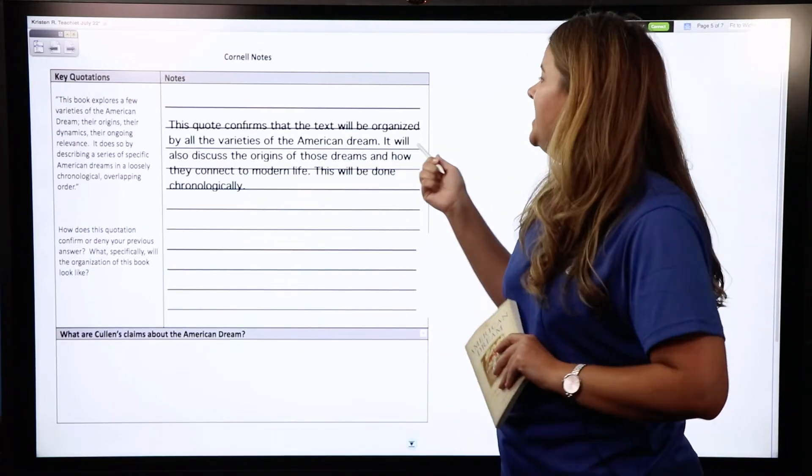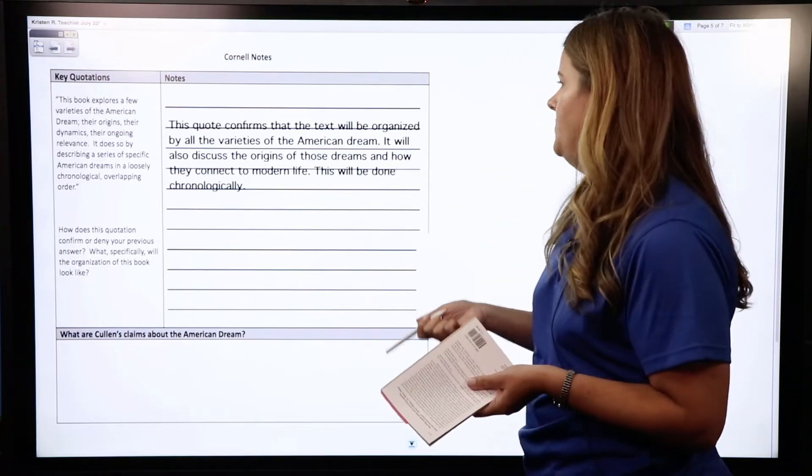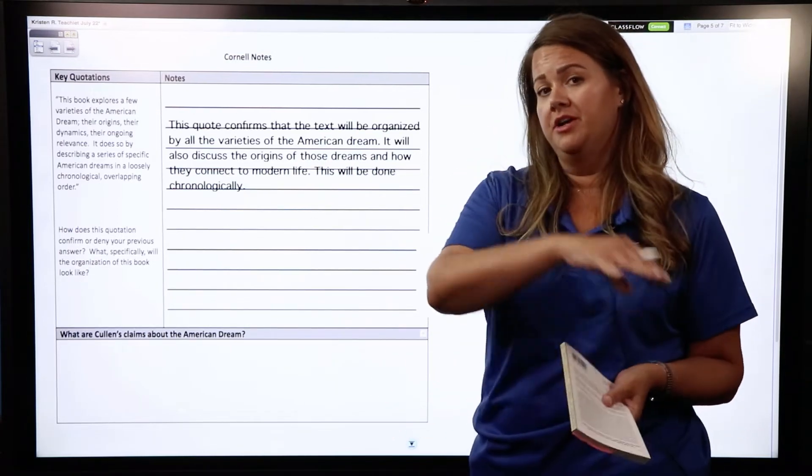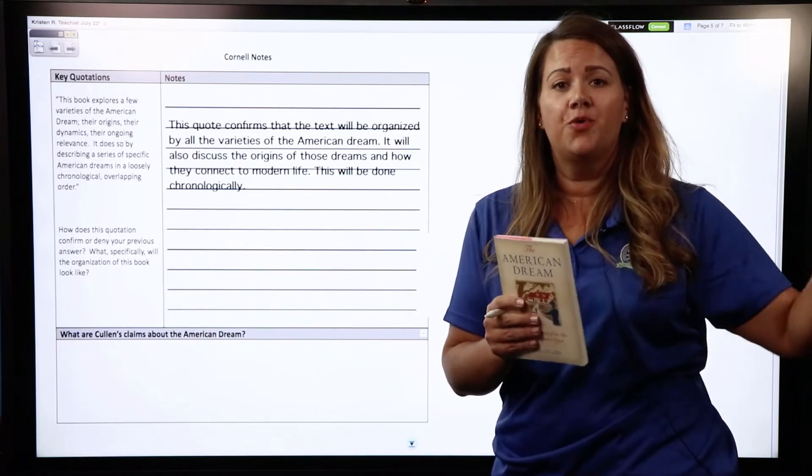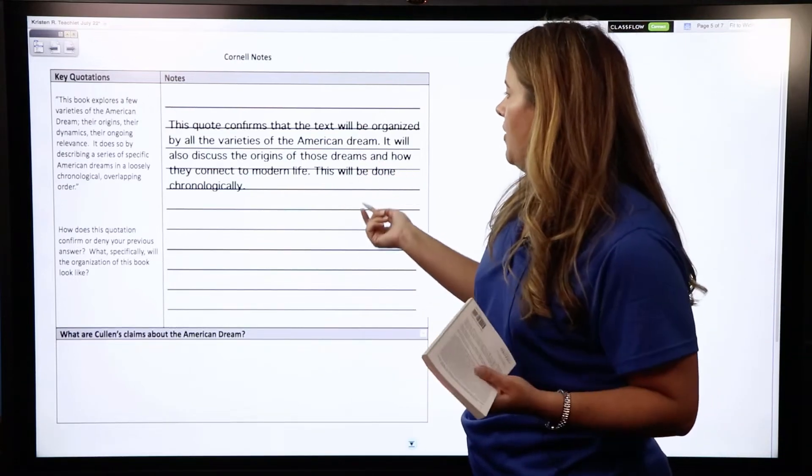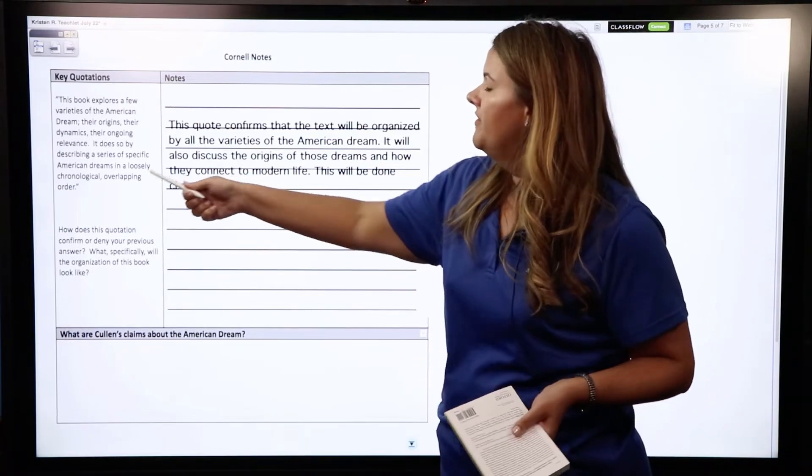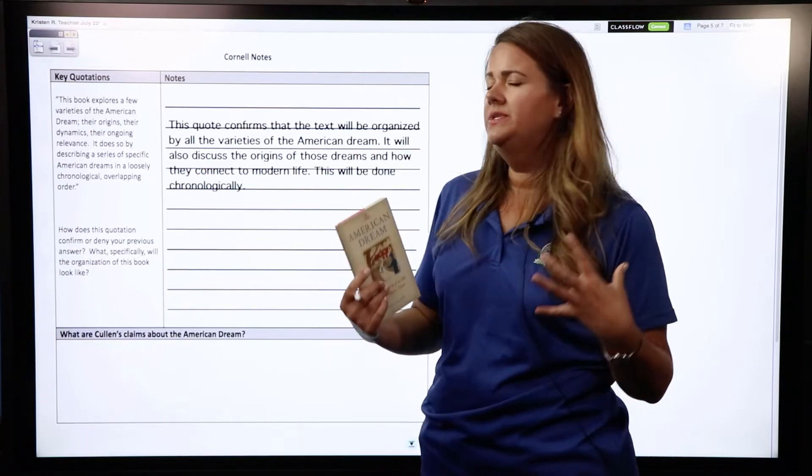I'm also being informed that we're going to learn about the origin of those dreams for different people and how the American dream still connects to modern life today. So past and present. Now how will that be presented to me? Well if I look in the very last section here it says that it's in a loosely chronological overlapping order.